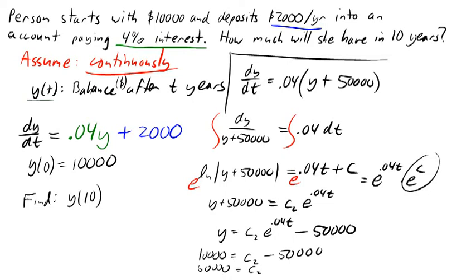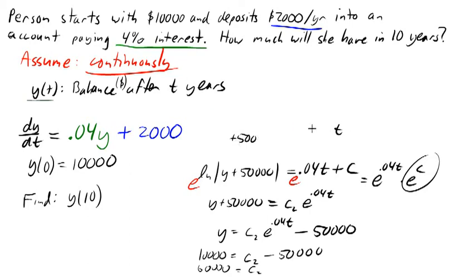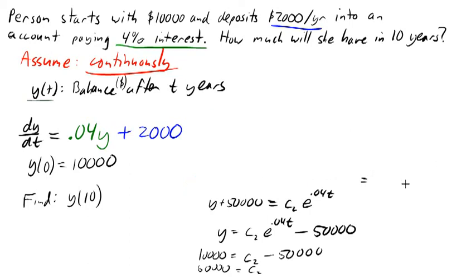So putting that all together, we get our final solution as y of t equals 60,000 e to the 0.04 t minus 50,000. That gives me the general formula for the amount in the account after t years. To answer the original question,